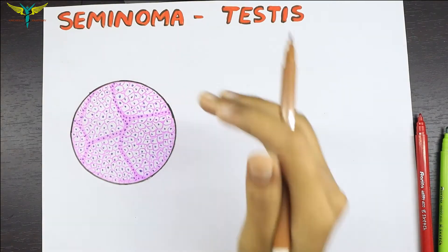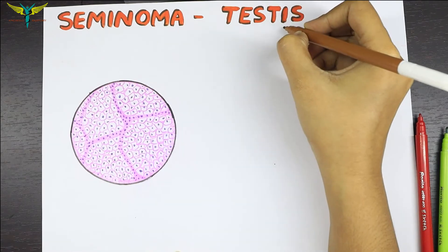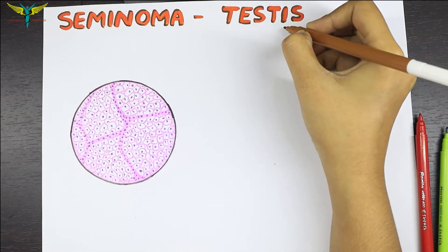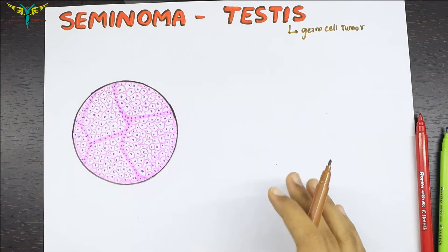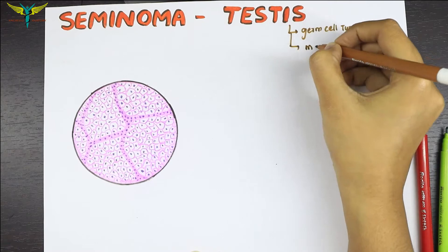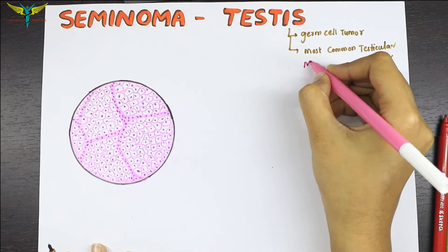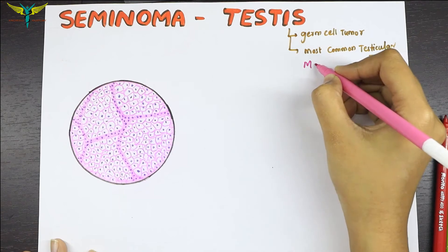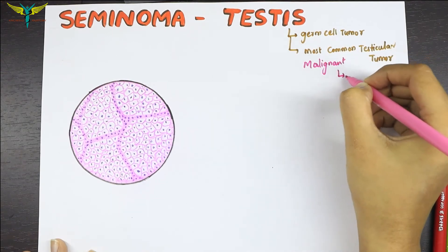Seminoma is a germ cell tumor mainly of the testicle, also called testicular cancer. It is the most common variety of testicular tumor. It is a malignant tumor which occurs in the 4th to 5th decade of life, that means 40 to 50 years of age.